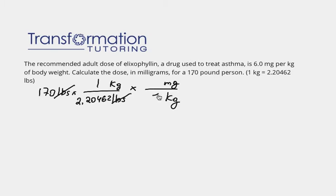We know that 1 kilogram of body weight requires 6.0 milligrams of this drug used to treat asthma. So kilograms cancel, and we get milligrams, which is what we were looking for. Let's go ahead and plug that into our calculator.